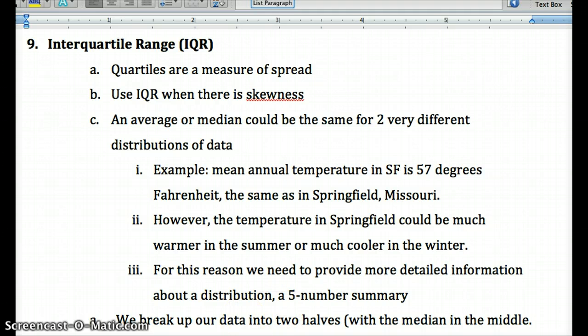So an example here is that the mean annual temperature in San Francisco is 57 degrees, which is the same as Springfield, Missouri. However, in San Francisco, we don't get really hot weather or really cold weather. And Springfield, Missouri has a much bigger range because they get very hot and very cold weather. So Springfield could be much warmer in the summer or much cooler in the winter.